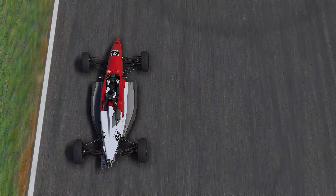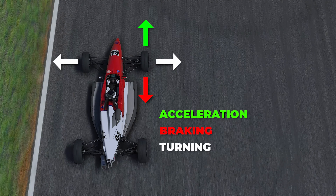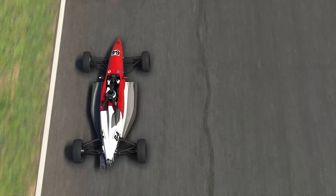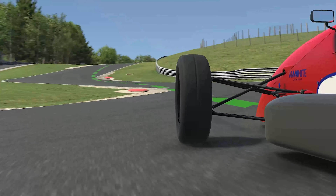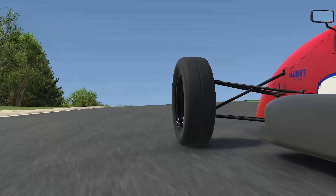There are three directional forces the tire is subject to: acceleration, braking, and turning. The tire's grip can be devoted to any one or combination of these forces. To accomplish a driver's command, a tire interacts with the surface of the track by distortion of the rubber moving over the surface, causing a small amount of slip.